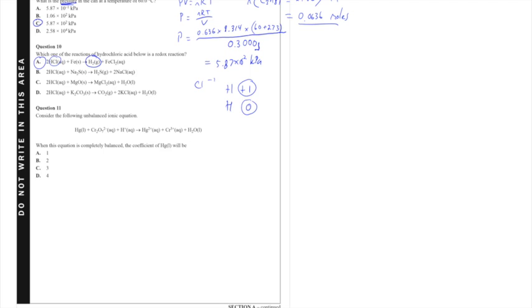Getting right into it, consider the following unbalanced ionic equation given right here. When this equation is completely balanced the coefficient of mercury liquid will be—what we need to do for this question is balance the chemical equation.